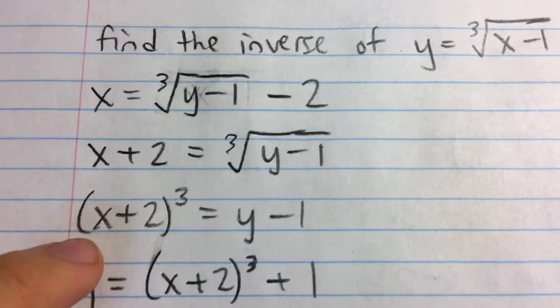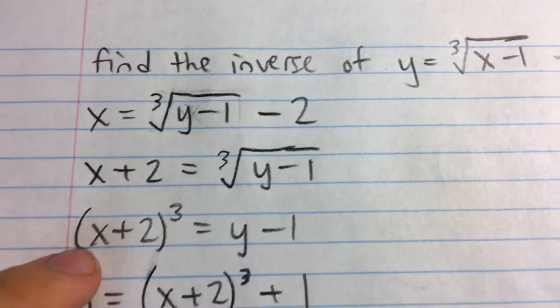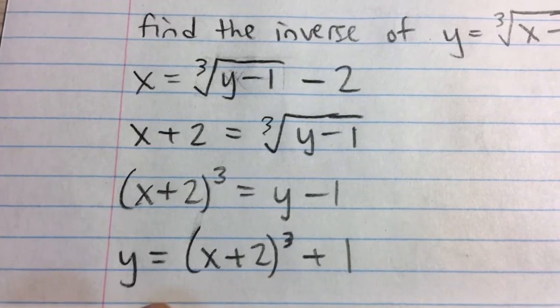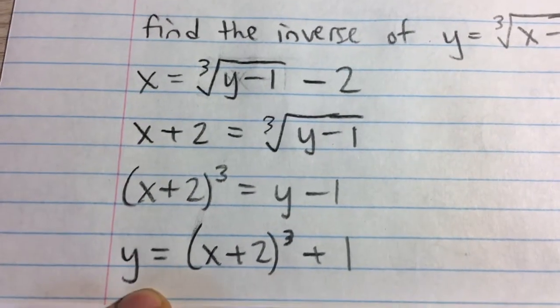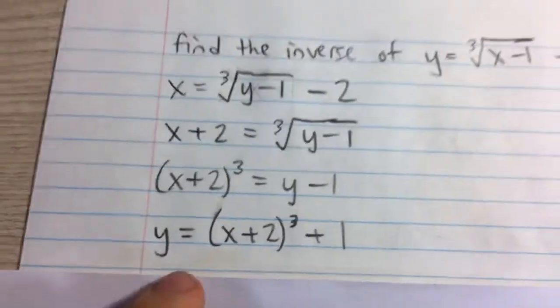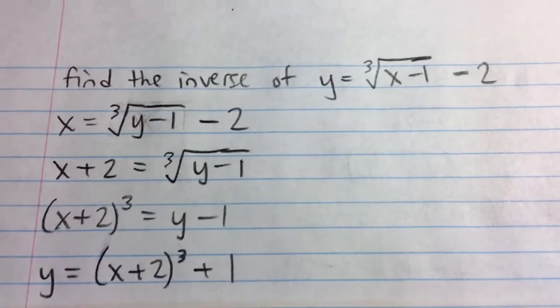Now, you could expand it, but that's kind of tedious, and it's not really necessary. So, I'm just going to leave it like that. And finally, to isolate y, we add 1 to both sides, and this is our equation: y is equal to x plus 2, all cubed, plus 1. That is the inverse of our original equation.